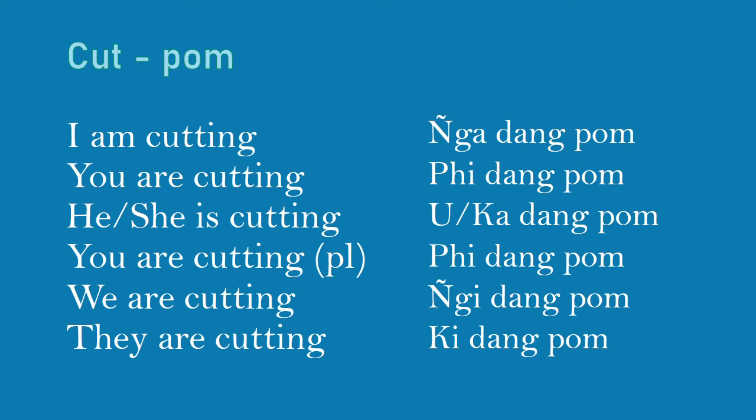Example with 'cut' (POM): I am cutting — Nga DANG POM. You are cutting — Pi DANG POM. He or she is cutting — Wu DANG POM or Ka DANG POM. We are cutting — Ngi DANG POM. They are cutting — Ki DANG POM.